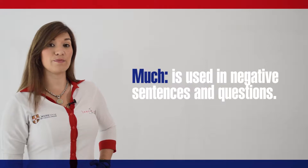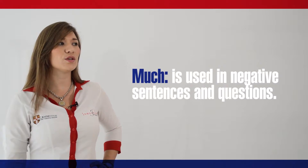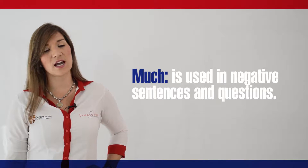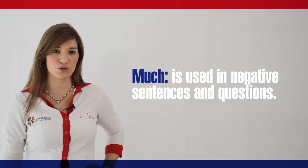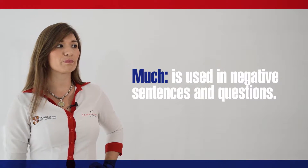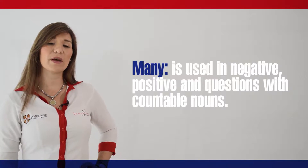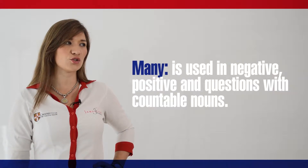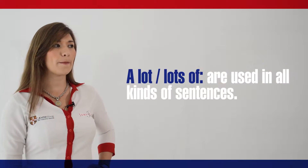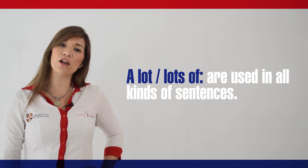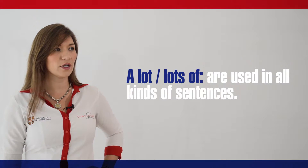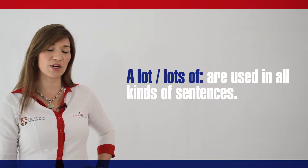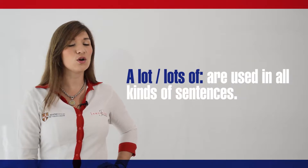To indicate a lot, we use 'much' or 'many.' Much is used in negative sentences as well as in questions with uncountable nouns. And with 'many,' we use it in negative, positive, and also questions with countable nouns. But we have 'a lot' or 'lots of' to use in all kinds of sentences.